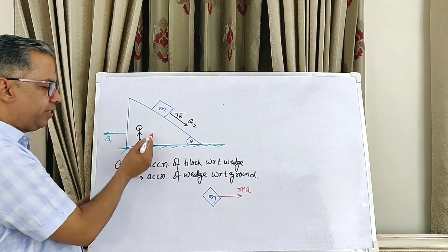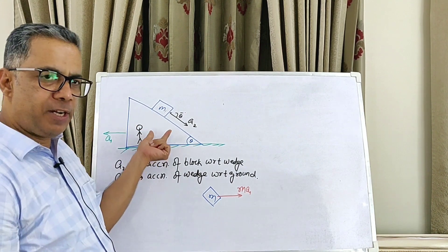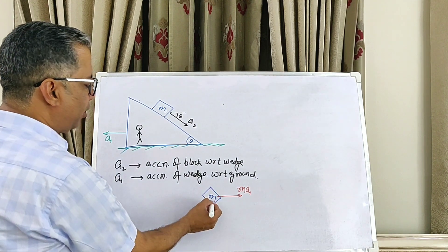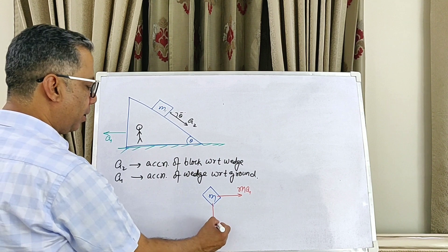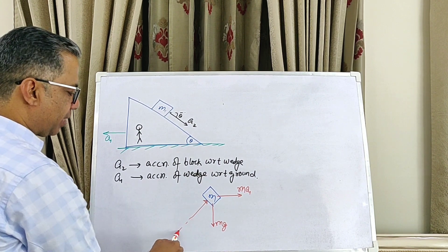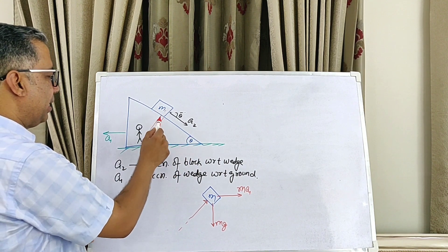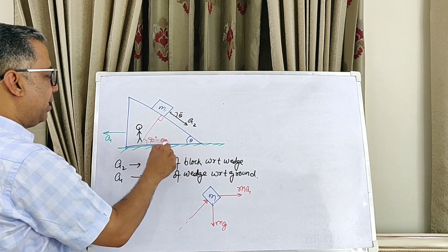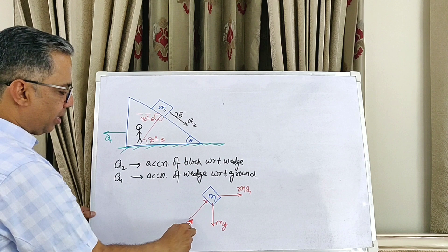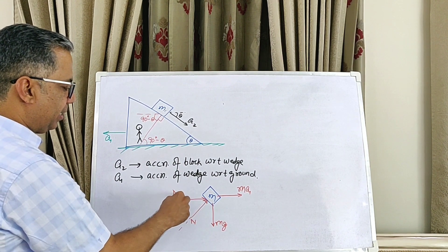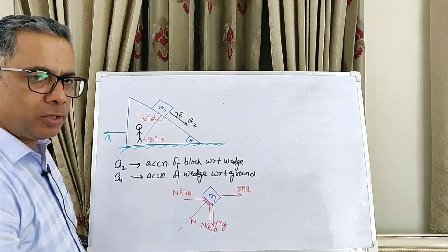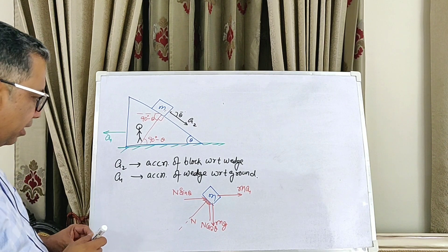There will be a pseudoforce toward the right equal to mA1. Why to the right? Because the reference frame — the wedge — is accelerating to the left with acceleration A1, so the pseudoforce acts to the right. There is also mg acting downward. A normal force N acts perpendicular to the inclined surface, at angle (90° − theta) from vertical, giving horizontal component N sinθ and vertical component N cosθ.